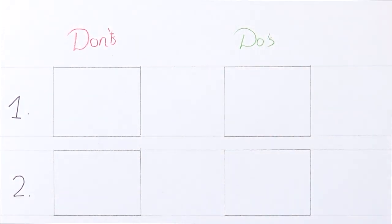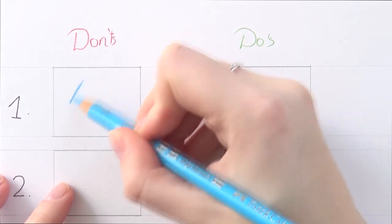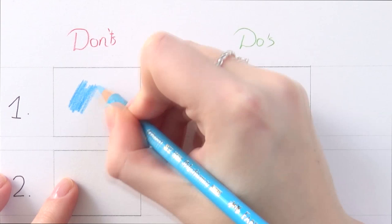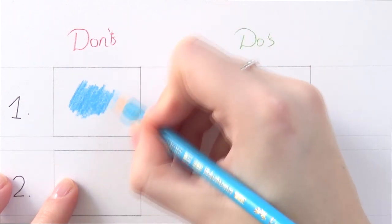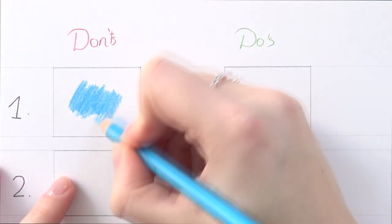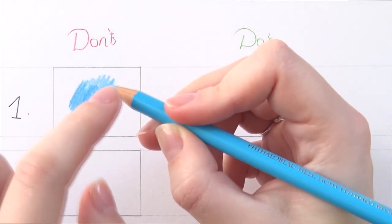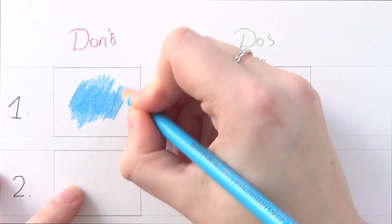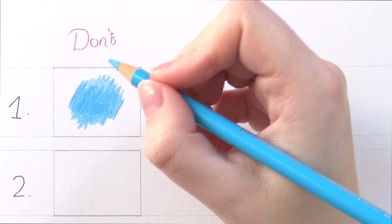Alright let's get started. So the first don't is something that I see a lot with beginners and that is too much pressure right away. So if you start layering and you're putting down too much pressure like this, you saturate the paper too quickly which means that you can't add a lot of layers on top and this effect of too much pressure occurs when you hold the pencil too close to the tip. So right like I'm doing right now.